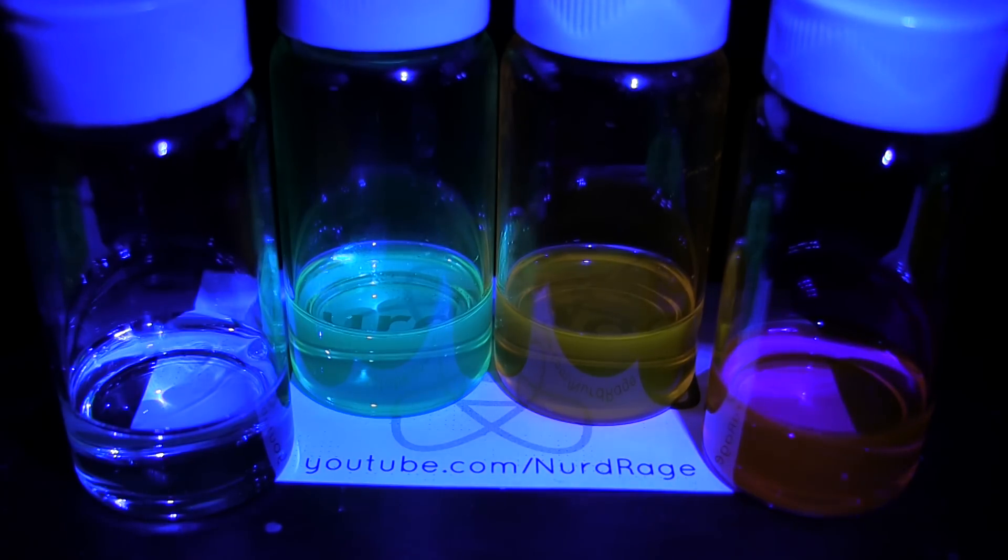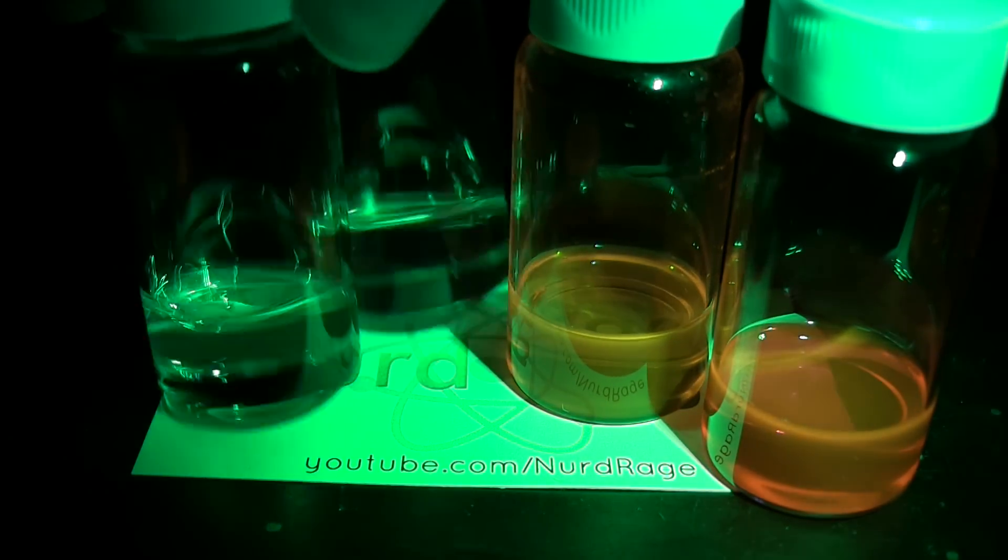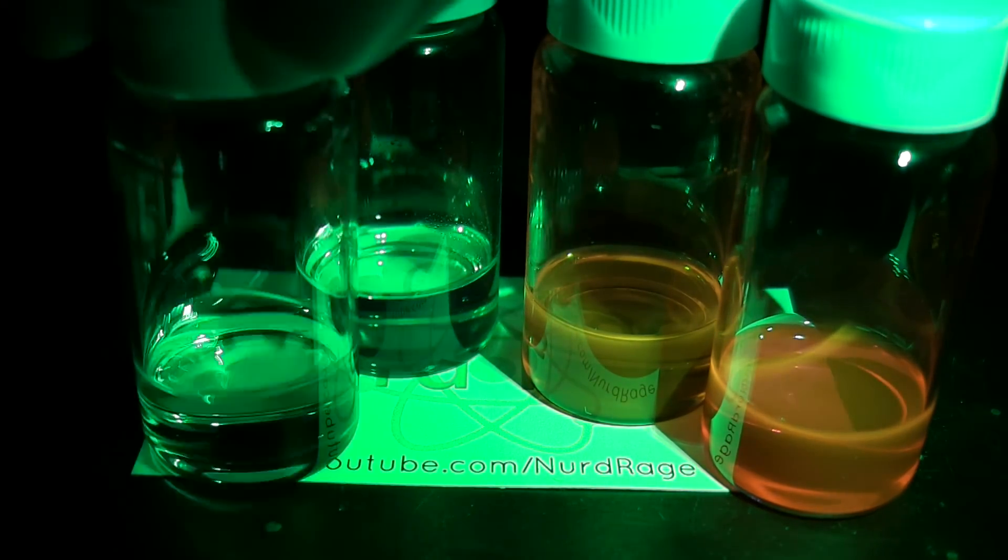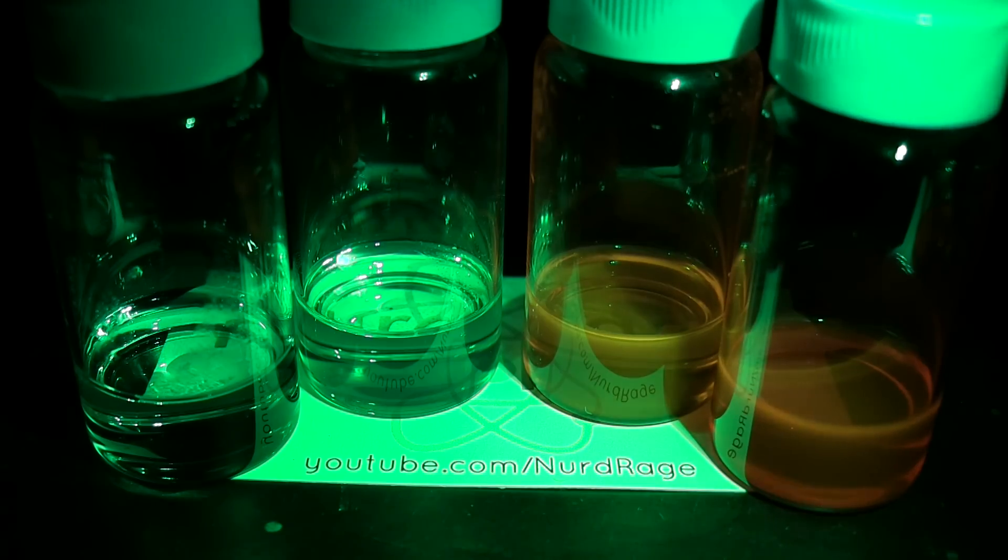Now let's move on to green light. Now the first two dyes go clear since they don't absorb green and can't emit light since green has a lower or equal energy. But for the last two dyes, yellow and red, green light is still within their absorption band and has enough higher energy to cause them to fluoresce.